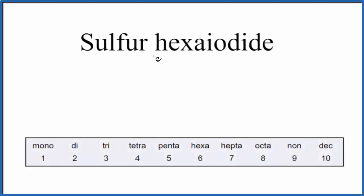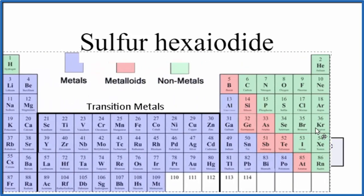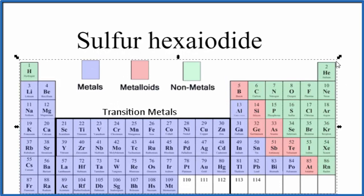To write the formula for sulfur hexaiodide, we first need to figure out what type of compound we have. So if we look at the periodic table here, we'll see that sulfur, that right here, sulfur, that's a non-metal.